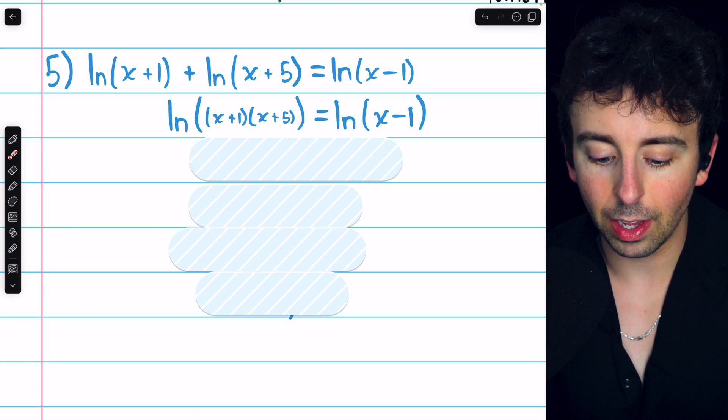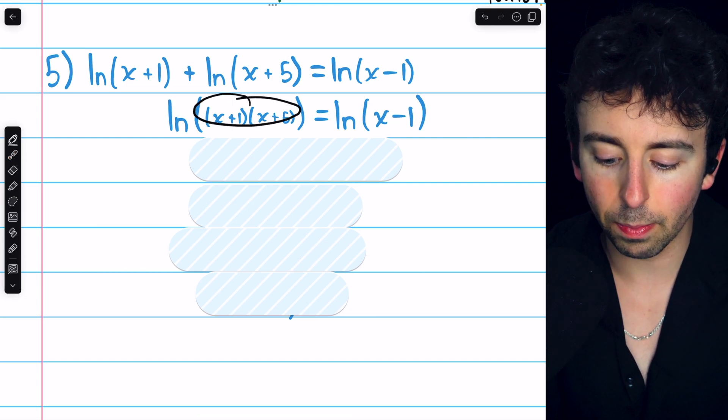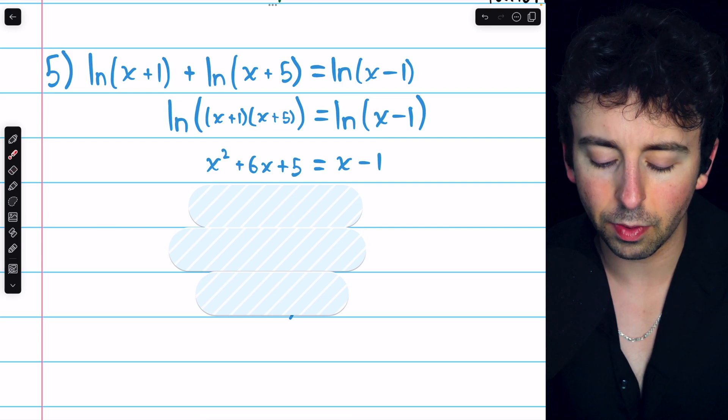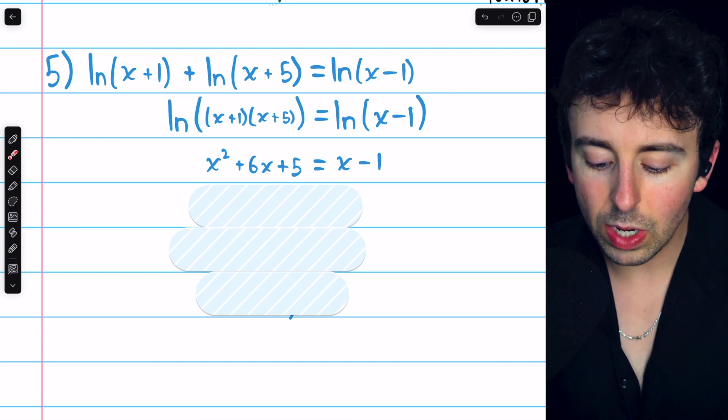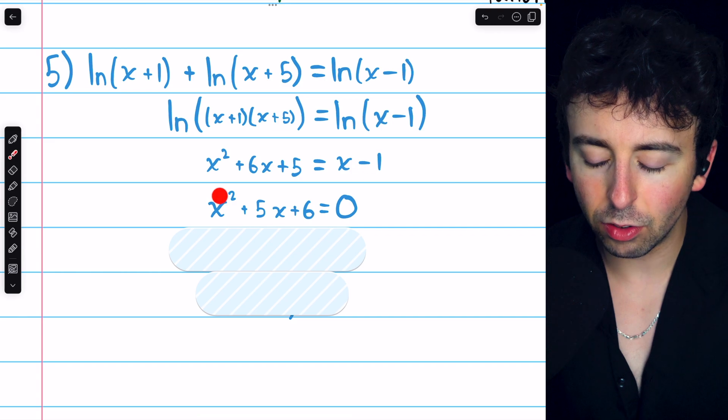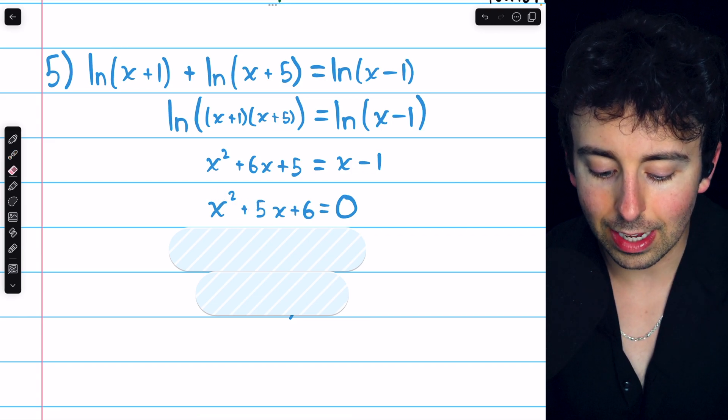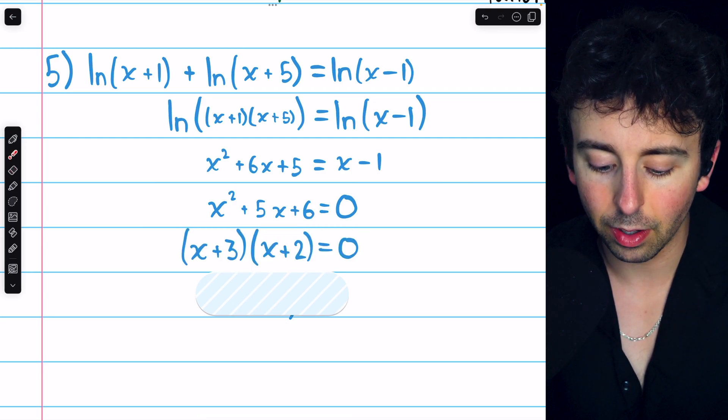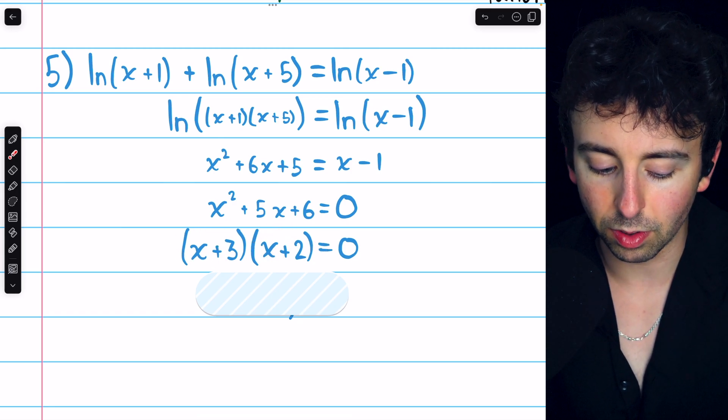Now again, we use the one-to-one property. If the log of this equals the log of this, well, these two inputs must be equal. And so we have x plus one times x plus five, which is just this quadratic, equals x minus one. Then we can subtract x from both sides and add one to both sides to get x squared plus five x plus six equals zero. Now this is pretty easy to solve just by factoring. Three and two multiply to six and add to five, so we can factor this as x plus three times x plus two. This is equal to zero. And so we find two potential solutions, x equals negative three and x equals negative two.